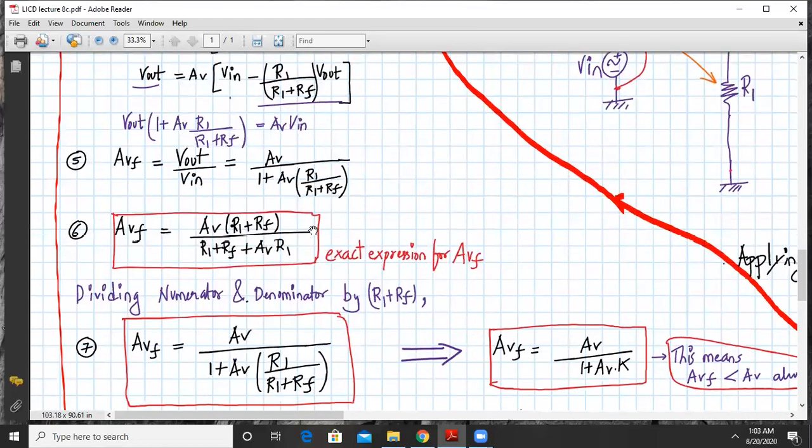If you multiply the denominator and the numerator by R1 plus RF, we will get this final exact expression for the closed loop gain, which is given by AVF equals AV times R1 plus RF divided by R1 plus RF plus AV times R1. This is my exact expression for AVF.